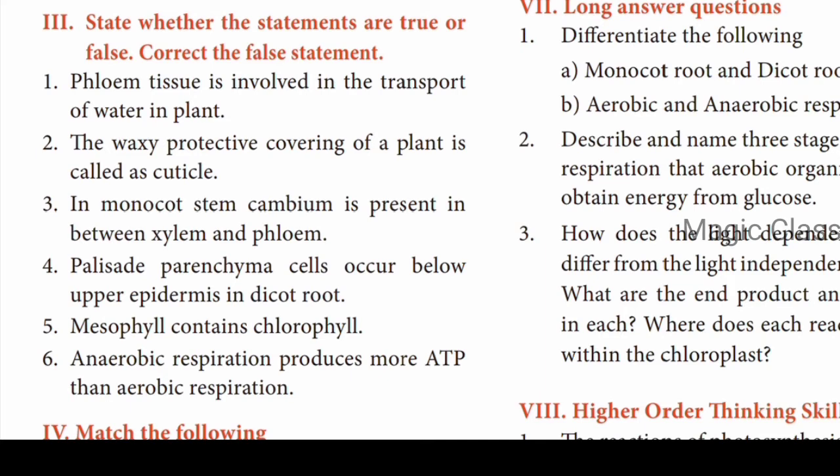Third statement: in monocot stem, cambium is present in between xylem and phloem. Answer: False. The correct statement is — in dicot stem, cambium is present between xylem and phloem, not in monocot stem. Fourth statement: palisade parenchyma cells occur between upper epidermis in dicot root. Answer: False. Correct statement: palisade parenchyma cells occur below upper epidermis in dicot leaf, not root.